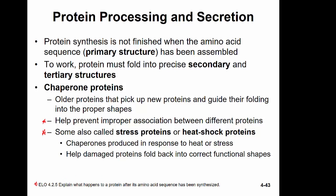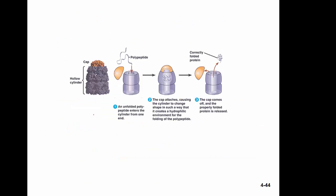The chaperone protein takes in the polypeptide chain, a cap joins on, changes the shape of the complex, and while it's closed in there, the polypeptide goes through the process of being folded correctly. Once folded correctly, it is released from the chaperone and goes on to perform its function within the cytoplasm or other parts of the cell.